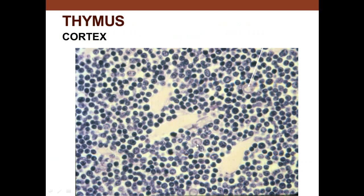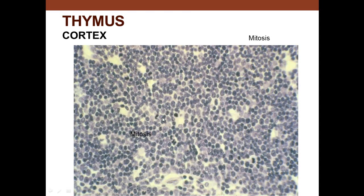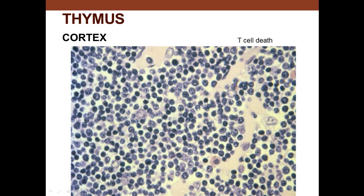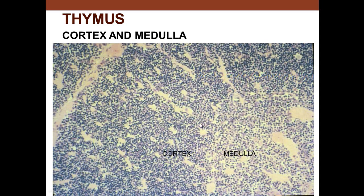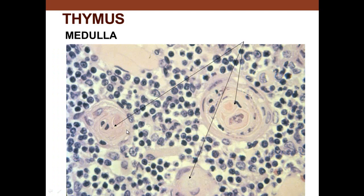In the cortex, the large reticular cells have large euchromatic nuclei and prominent nucleoli, with many lymphocytes and mitotic activity present. T cell death also occurs in the cortex — if a cell would attack self, it is killed before it can develop, while still in the antigen-free environment. So there is both growth and selection of cells in the thymus. Hassall's corpuscles in the medulla are diagnostic for this organ.